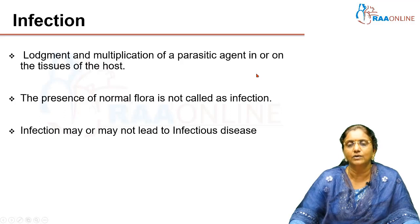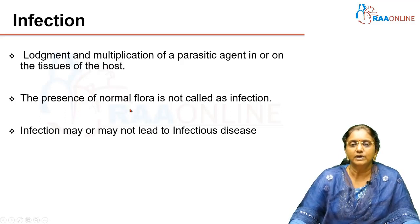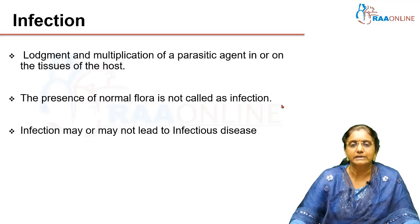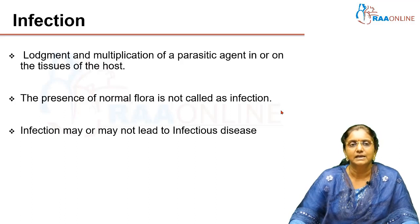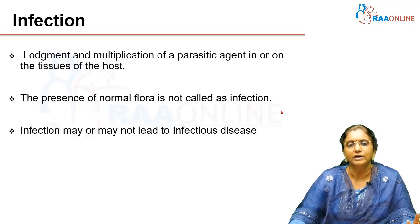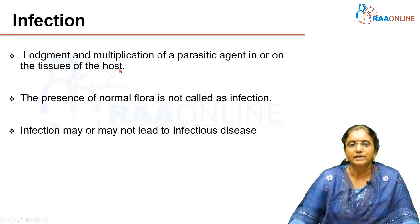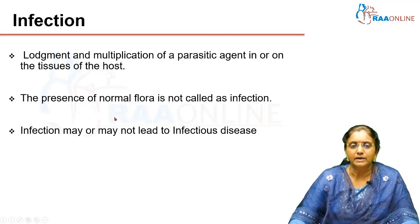By parasitic agent, we mean all microorganisms capable of causing infection and later disease. The presence of normal flora is not called infection. In our respiratory tract, gastrointestinal tract, and the distal portion of the urethra, bacteria are normally present and don't cause disease — those are normal flora. Also, an infection may or may not lead to an infectious disease.